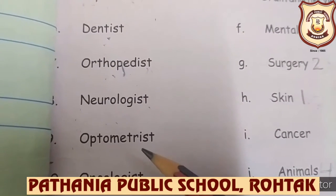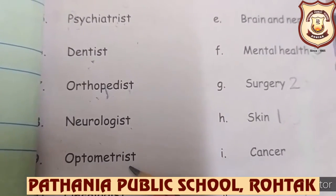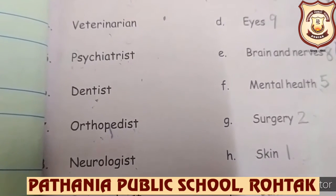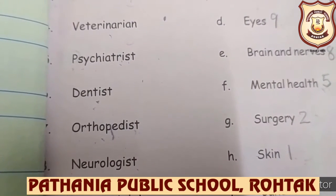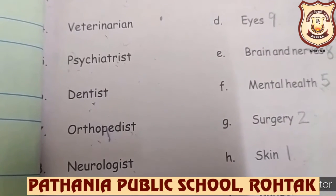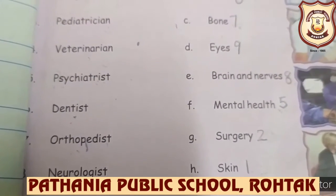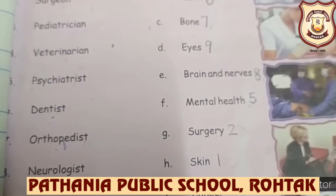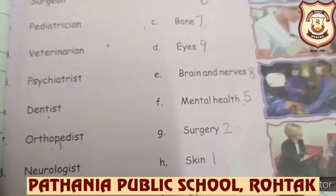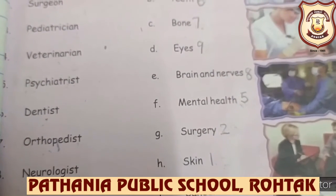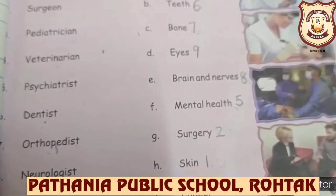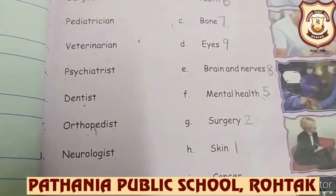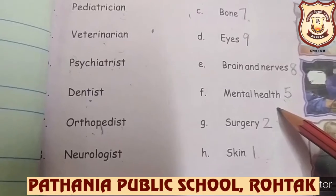Number nine: Optometrist. An optometrist treats conditions related to the eyes. So for number nine, match with 'eyes.' When our vision is poor, it becomes quite difficult to read. To keep your vision strong, you need a balanced diet and healthy eating. Also, you must spend less time on electronic devices such as tablets, mobile phones, and computers. Reduce continued exposure to digital devices and keep a good distance from the screen while watching TV or using a mobile phone.